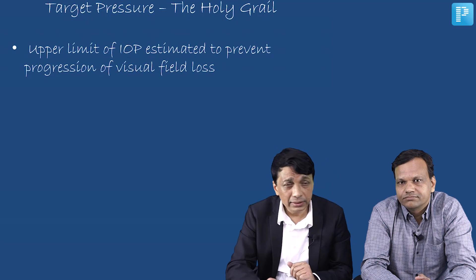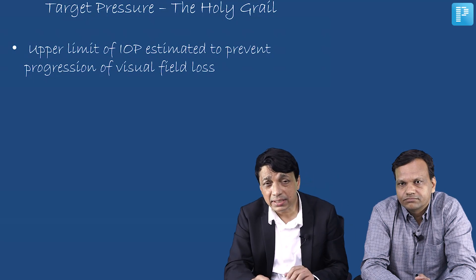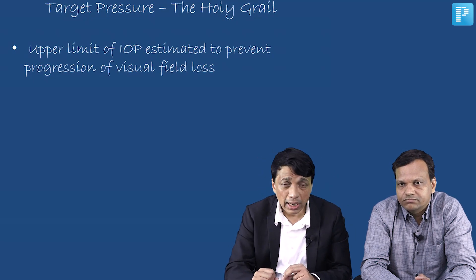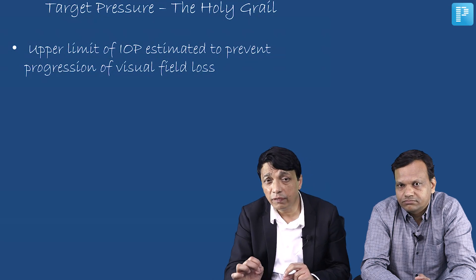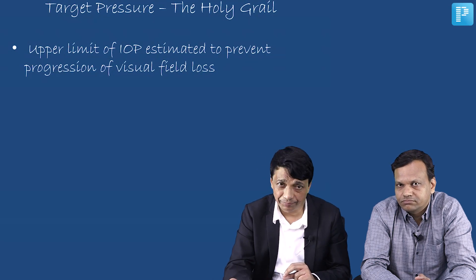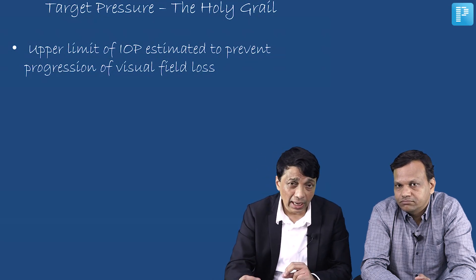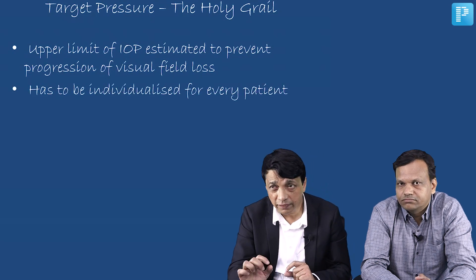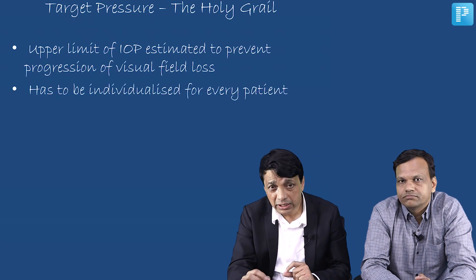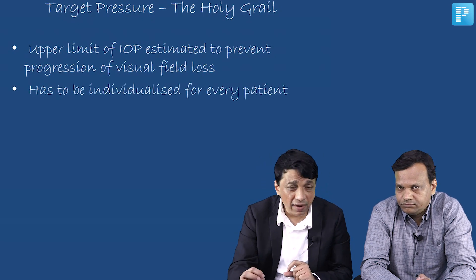Therefore, we have this concept called the target pressure. Target pressure is the holy grail of glaucoma specialists — it is the upper limit of intraocular pressure estimated to prevent progression of visual field loss. This is just an estimation and it depends on the patient; it is not fixed but is individualized for every patient.